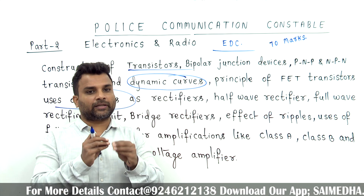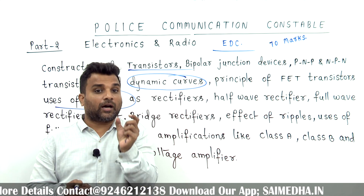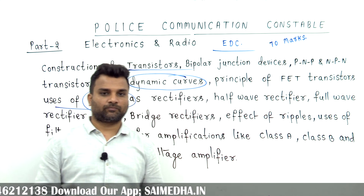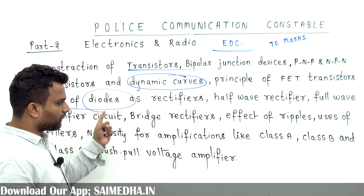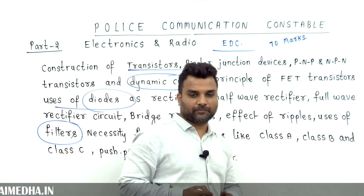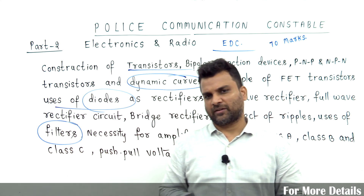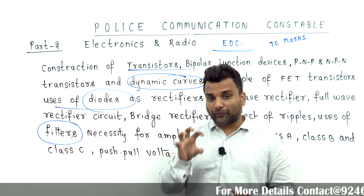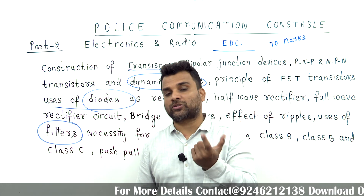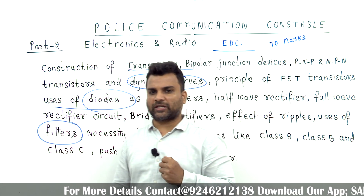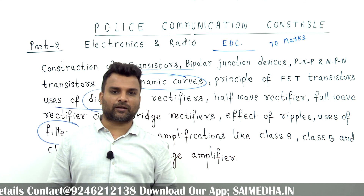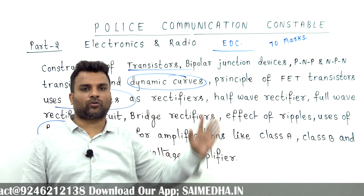That means if a rectifier doesn't convert fully to DC, there are ripples — unwanted AC components. We eliminate these with filters. The topics are: half-wave rectifier, full-wave rectifier, bridge rectifier, effect of ripple, and uses of filters. For heavy loads and light loads there are different filters. The LC filter is used for any kind of load.